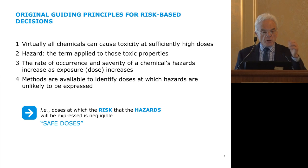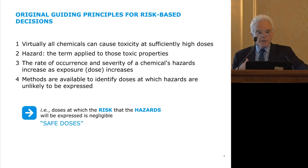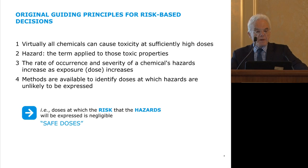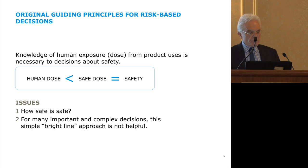Let me go back to some original guiding principles — very high school toxicology, but important because it guides what we're doing. We work under the assumption that everything we're dealing with can at some point become toxic. Hazard is the term we apply to the toxic properties of chemicals, and there is a dose-response relationship. We think we have methods to identify what we call safe doses — doses at which the risk of toxicity is small. We look at human exposure; if that falls below what we think is a safe dose, we call that safe.